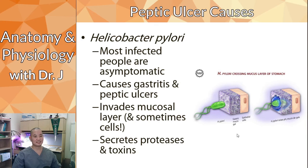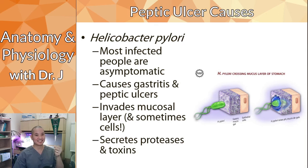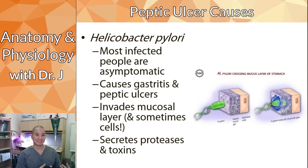It was once thought that ulcers were caused only by stress or excess acid. An Australian scientist controversially proposed that H. pylori bacteria cause peptic ulcers. To prove it, he grew a culture of H. pylori in the lab and swallowed it himself, developing ulcers the very next day. While this violated many lab safety rules, it demonstrated the bacterial cause of ulcers, and he was awarded a Nobel Prize for this discovery.